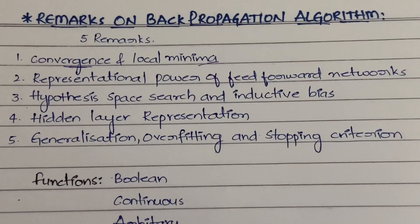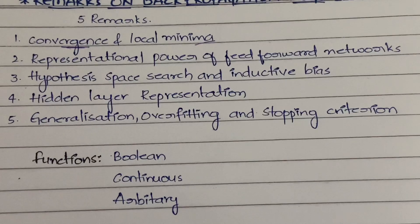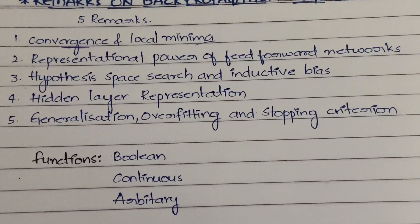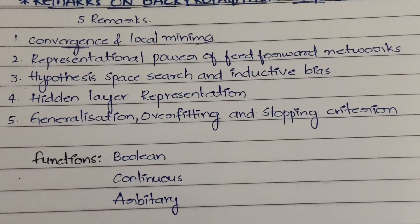To represent a network, we use functions. There are different types of functions used: boolean functions, which can be either true or false with only two values; continuous functions, which involve real values; and arbitrary functions, which use some random variable or random function.